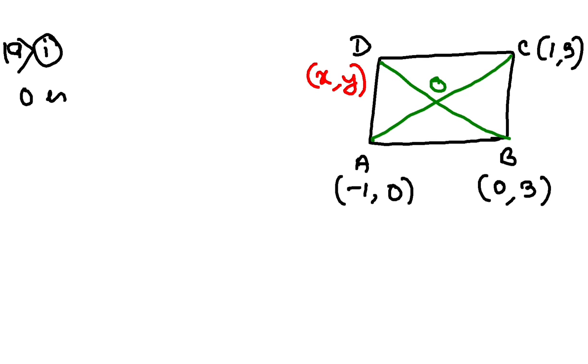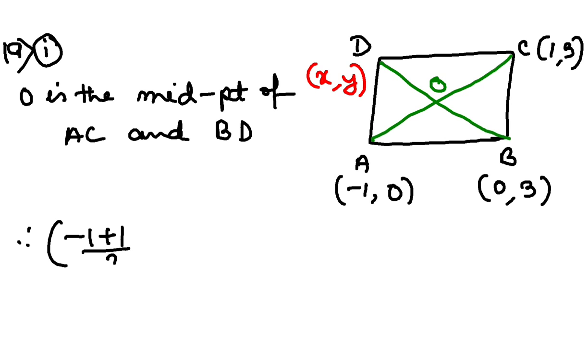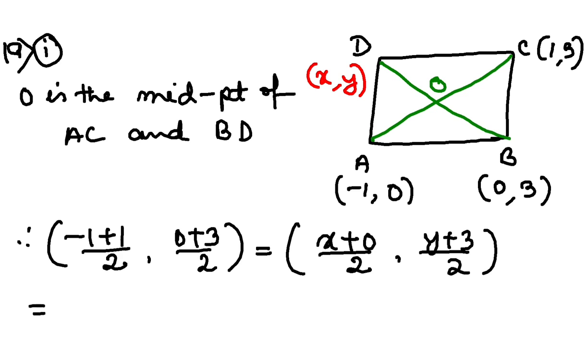What I am going to write here, O is the midpoint of AC and BD. So, if I take AC and O is the midpoint, if I apply the midpoint formula: minus 1 plus 1 by 2 comma 0 plus 3 by 2. Now, if I take BD, this is x plus 0 by 2 comma y plus 3 by 2. Midpoint formula, I have discussed in previous video.